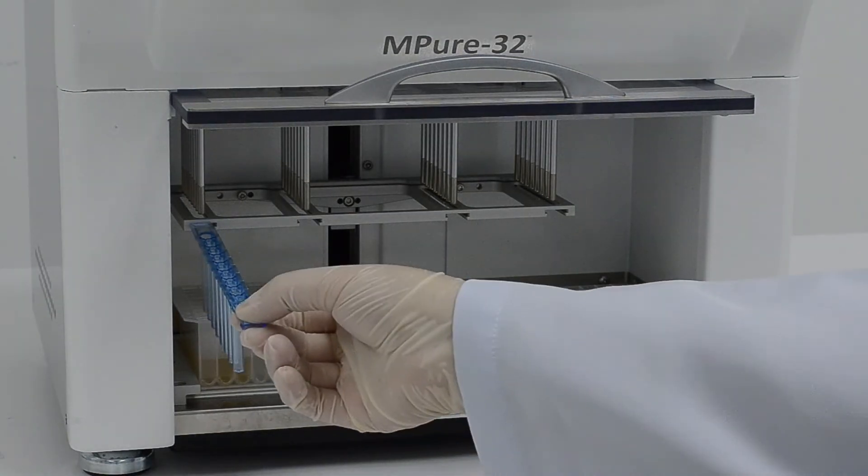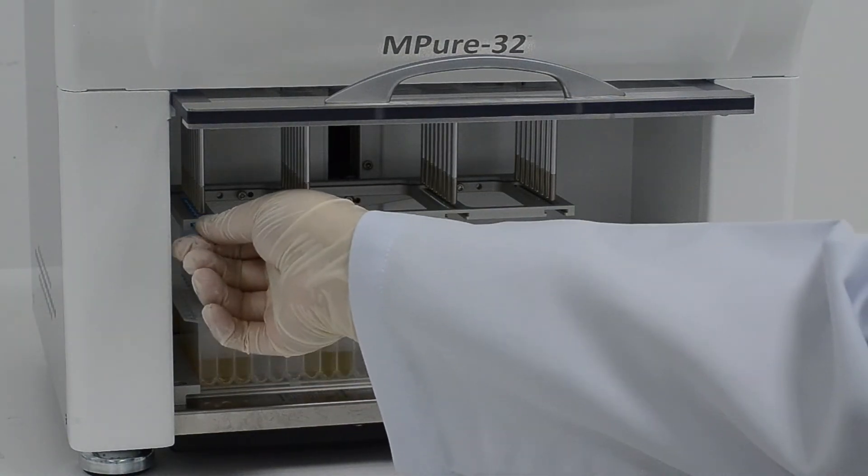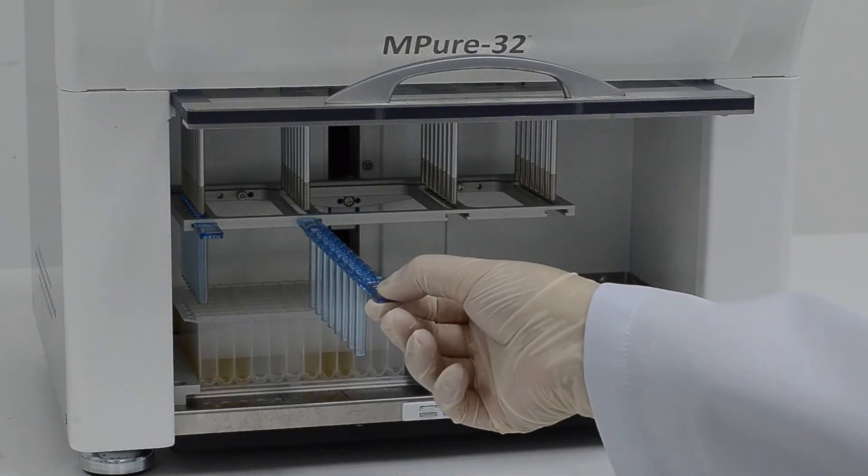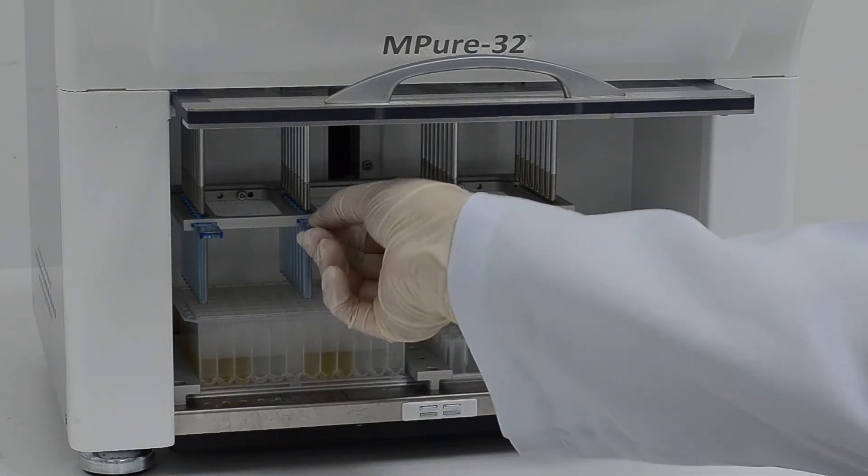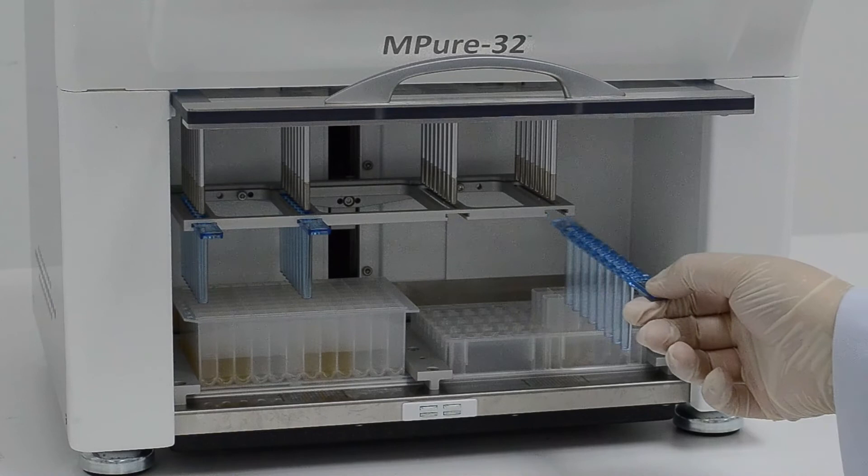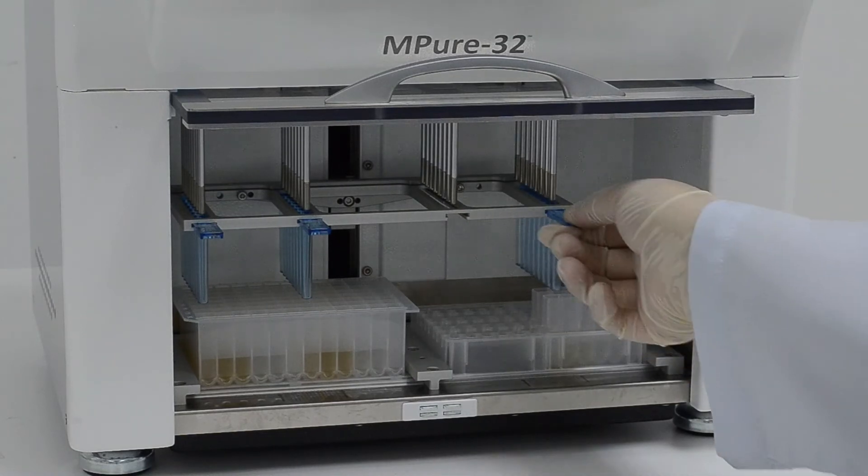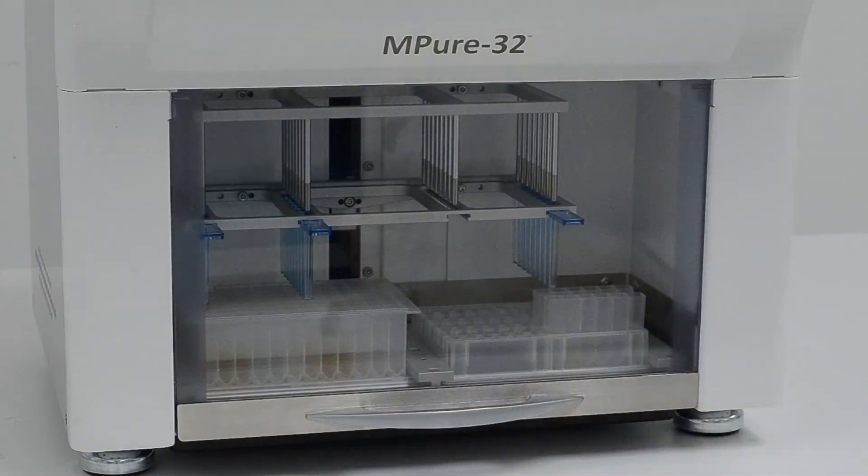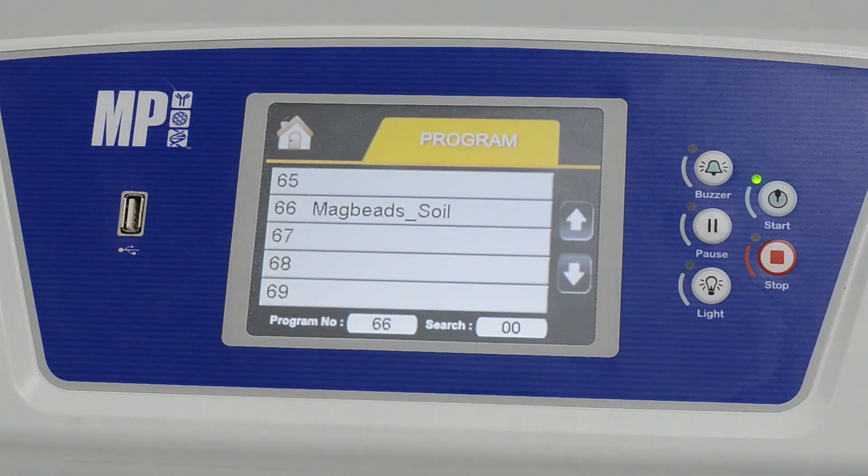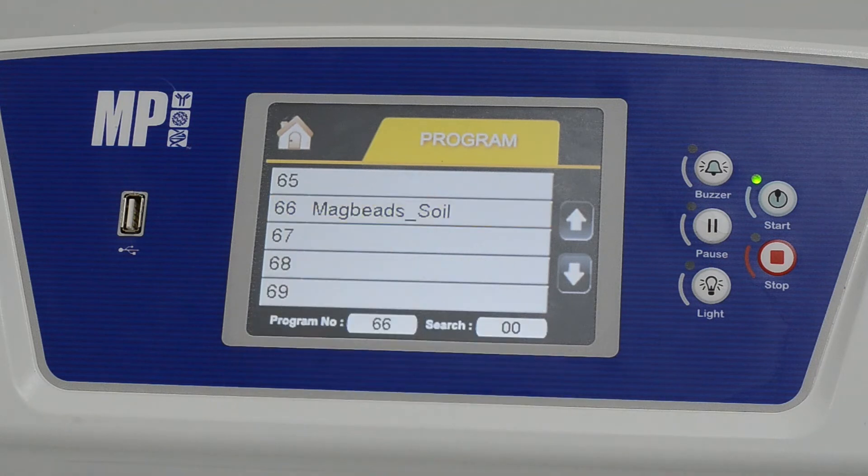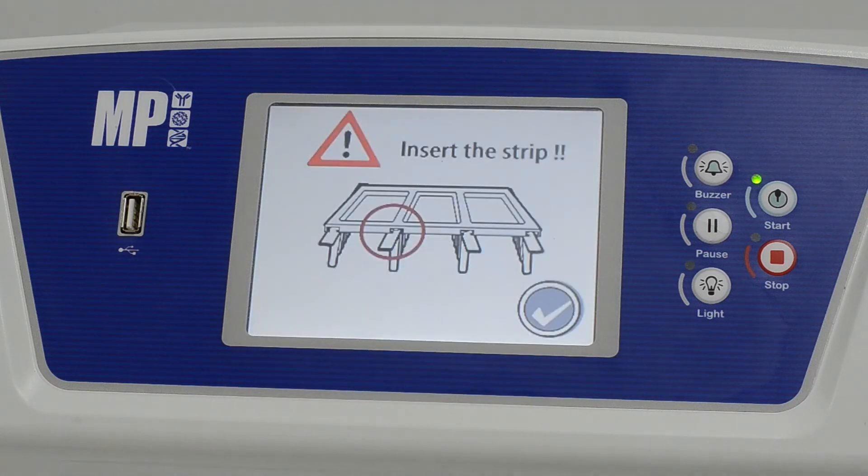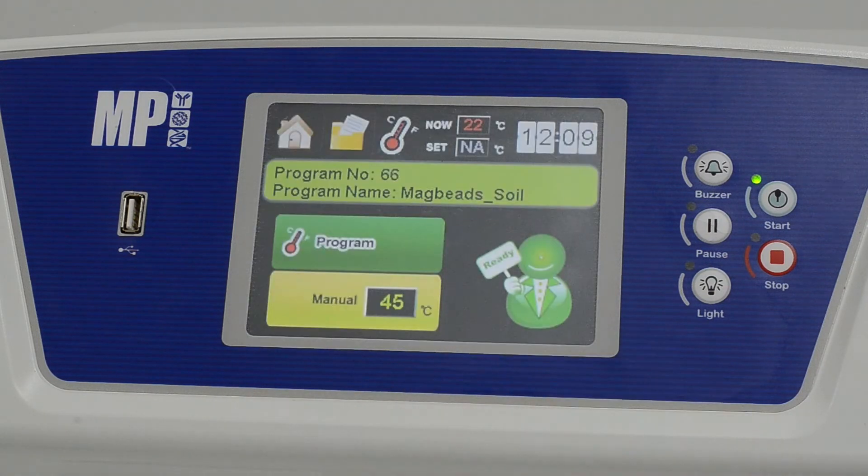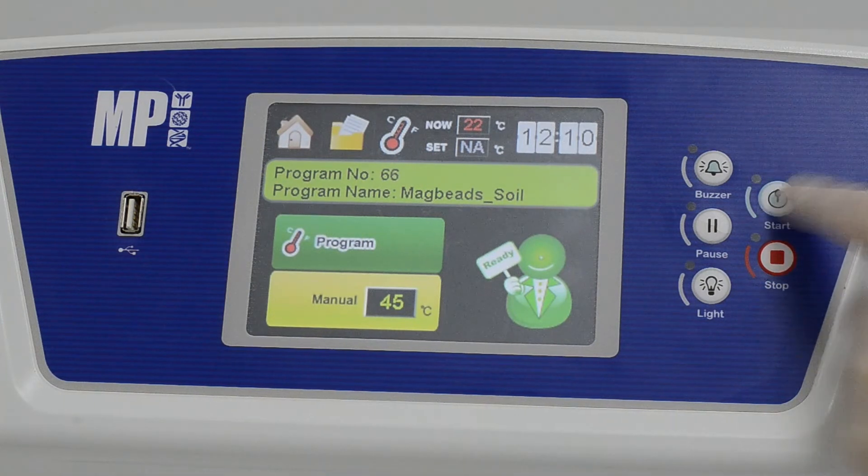Install the strips as per required. Press on program. Scroll to MacBits soil. Press on the tick to confirm. Click on start.